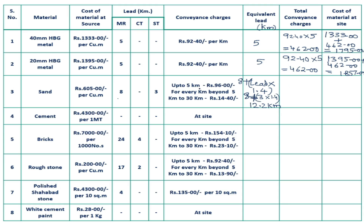The total conveyance charge is calculated from the rate table. There are different rates for different distances. Up to 5 km the rate is 96 rupees, and up to 30 km is 14.45 rupees per km. The equivalent lead is 12.2 km, so beyond 5 km: (12.2 minus 5) into 14.48. Total conveyance charge is 583.68 rupees.